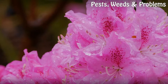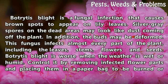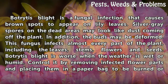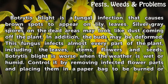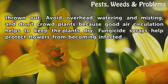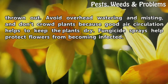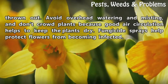Botrytis blight is a fungal infection that causes brown spots to appear on lily leaves. Silver-gray spores on the dead areas may look like dust coming off the plant. In addition, the buds may be deformed. This fungus infects almost every part of the plant, including the leaves, stems, flowers and seeds. Botrytis blight is worse when the weather is wet or humid. Control it by removing infected flower parts and placing them in a paper bag to be burned or thrown out. Avoid overhead watering and misting, and don't crowd plants because good air circulation helps to keep the plants dry. Fungicide sprays help protect flowers from becoming infected.